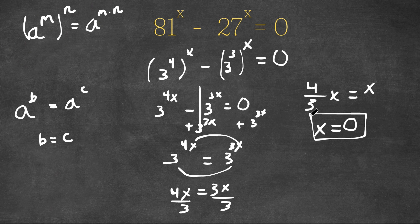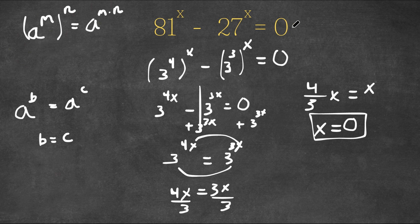And as you can see, if we plug 0 in for this equation, we get 81 to the power of 0 minus 27 to the power of 0 equals 0, and anything to the power of 0 is 1, so we get 1 minus 1 which does equal 0.